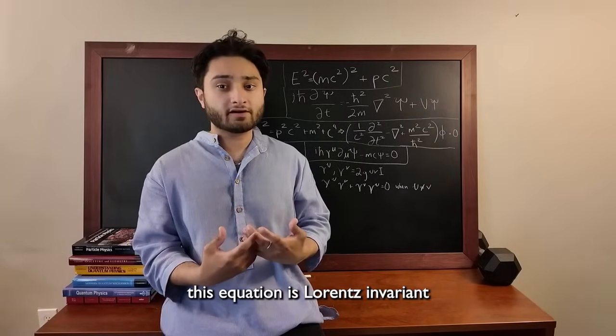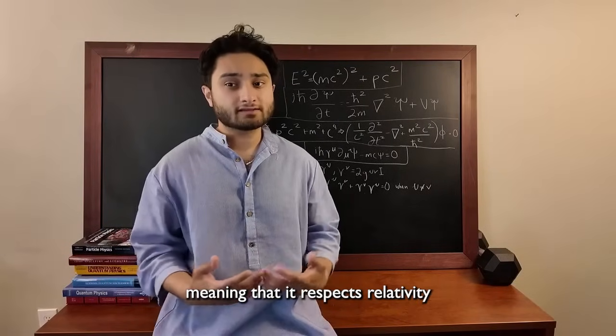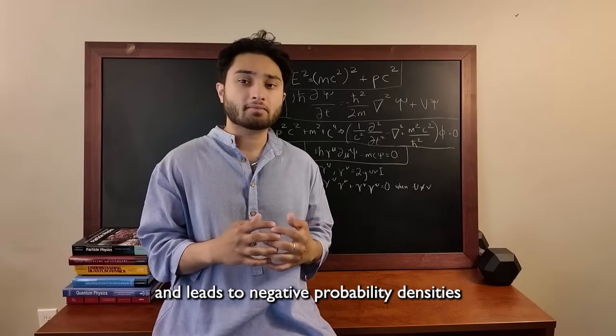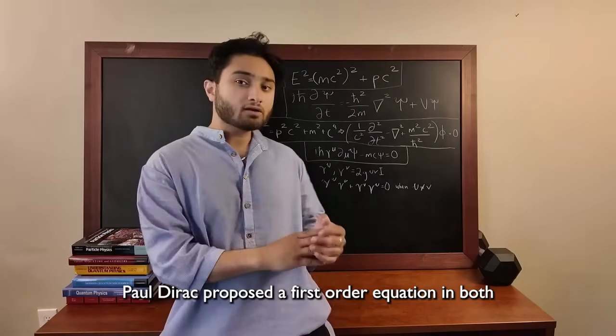This equation is Lorentz invariant, meaning that it respects relativity, but it only works for spin zero particles and leads to negative probability densities not suitable for electrons.